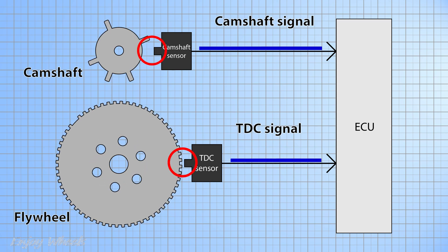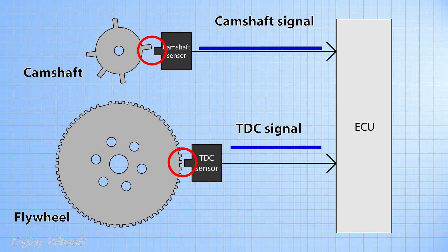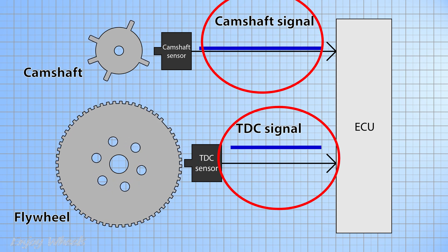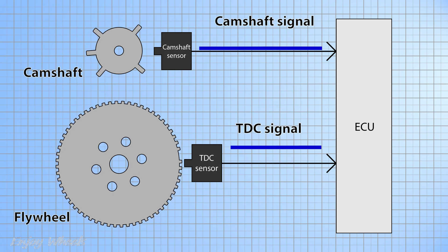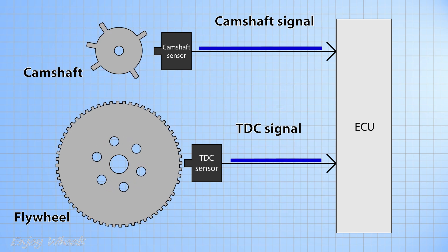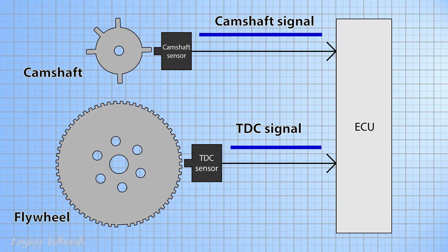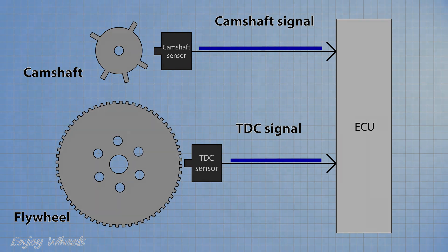For this, metal teeth pass in front of each sensor when the shaft rotates. The sensor sends a signal to the computer each time the tooth passes. If one of the sensors does not work, you will either have an engine running in degraded mode or an engine that will not start at all or that stalls. You will also probably have a warning light on the dashboard and an error code on the diagnostic tool.